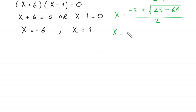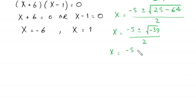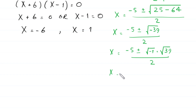This gives x = (−5 ± √(−39)) / 2. Since √(−39) = √(−1)×√39 = i√39, we get x = (−5 ± i√39) / 2.